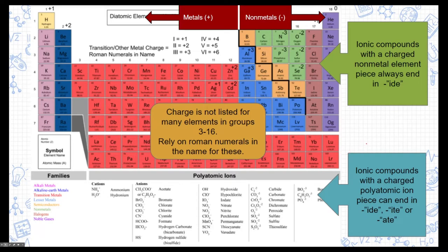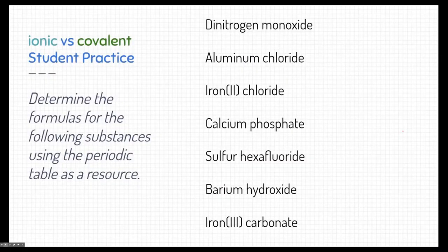Attached to this assignment is a link to this periodic table. Why don't you pause this video and go open it right now so we can use it for the next few slides. Let's take a moment and practice recognizing and writing ionic and covalent compounds — let's determine the formulas for the following substances. Remember to use that periodic table that you opened up in a different tab.